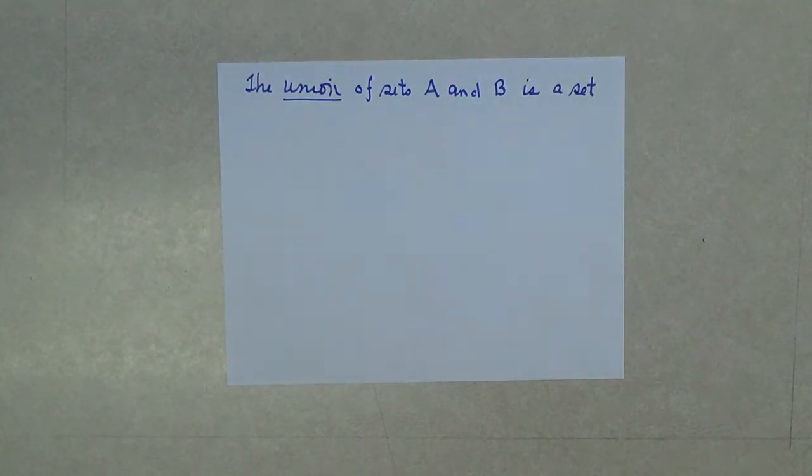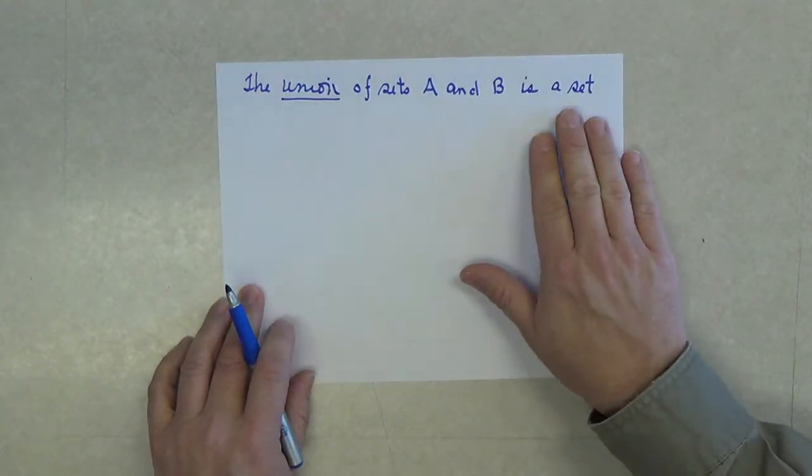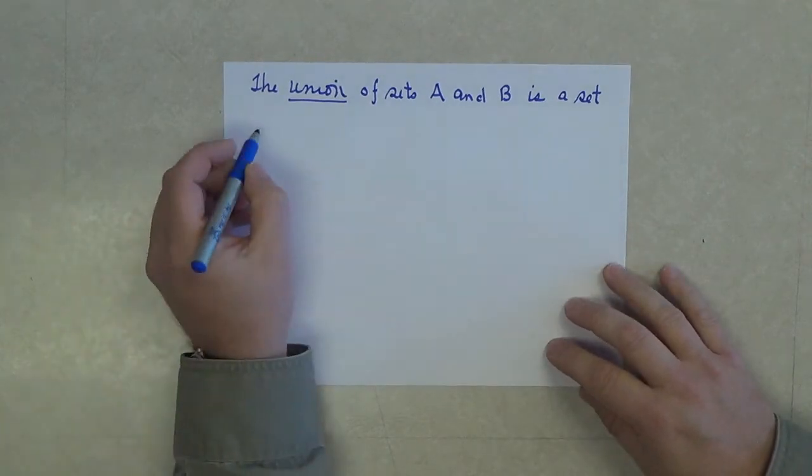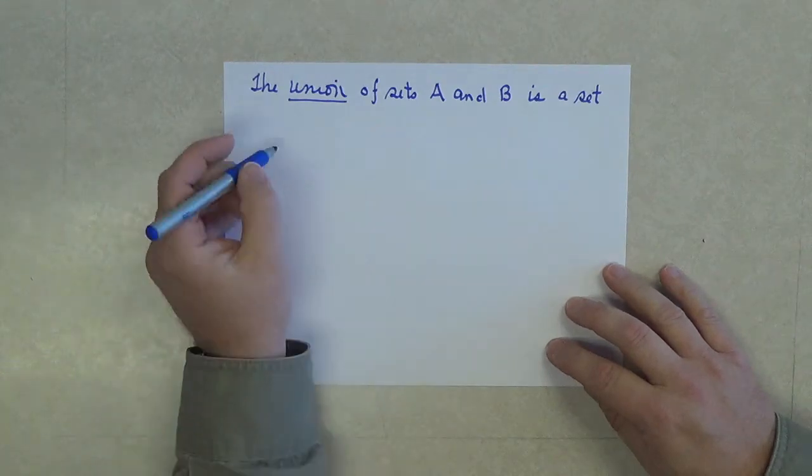When you find the union of two sets, you get a set as the answer. Now, let's talk about what's in this set.